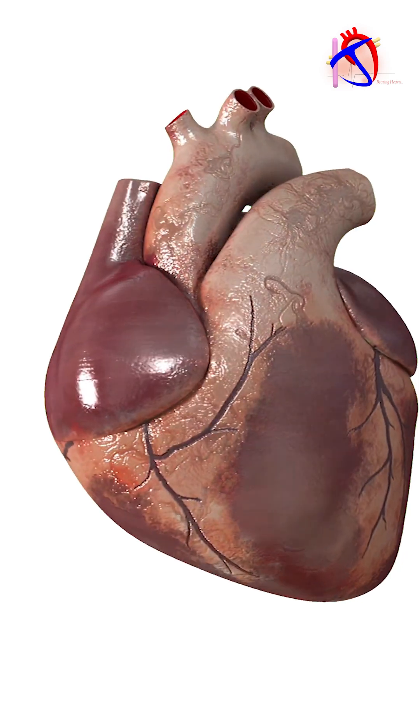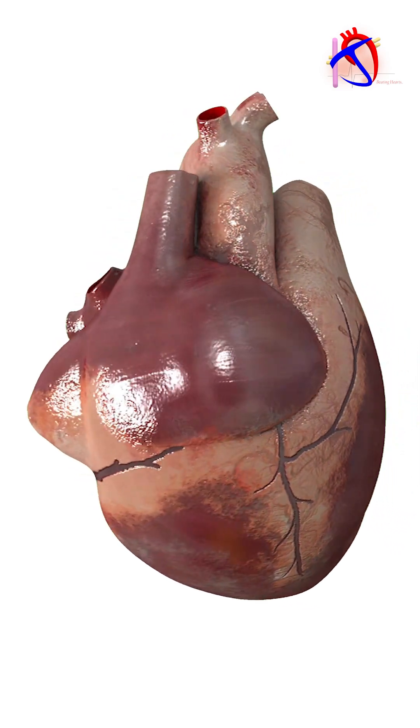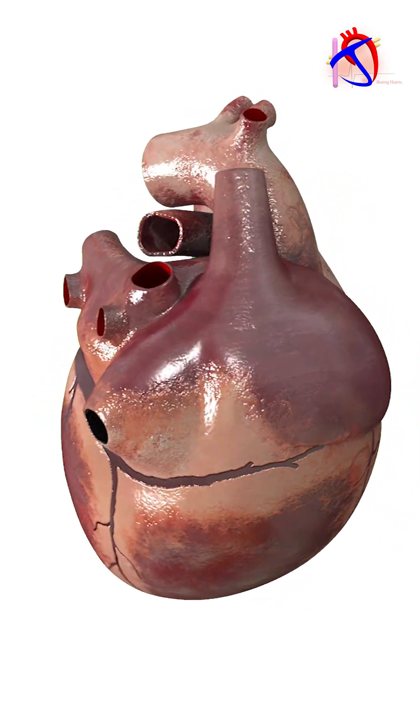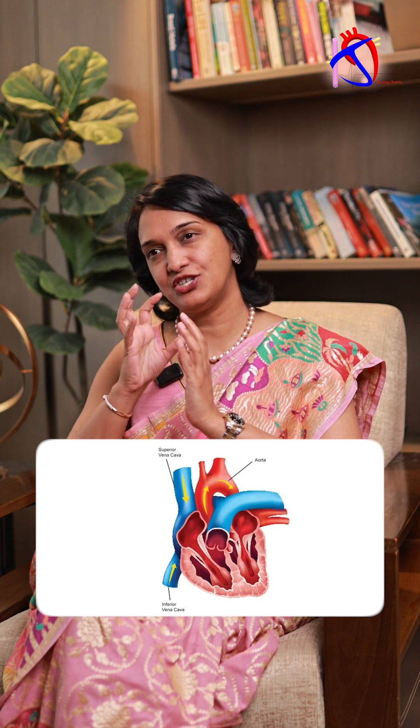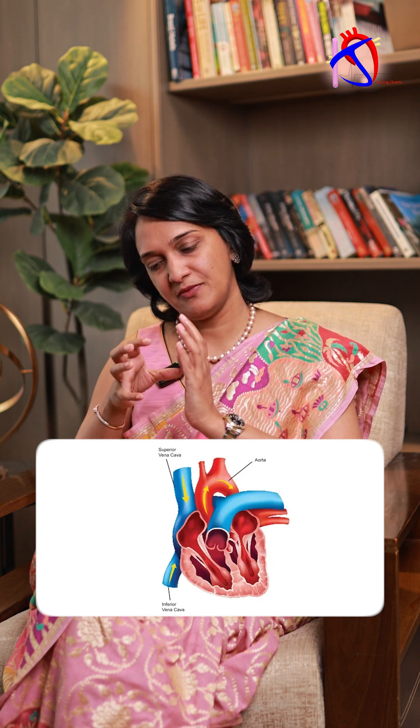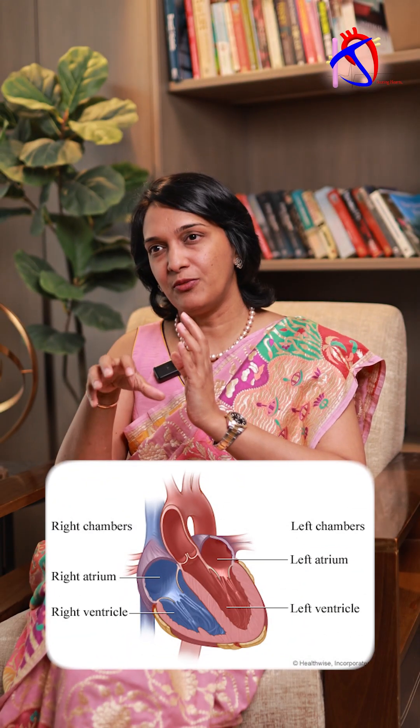Let's talk about basic anatomy of the heart and also the vascular system of the body. You have a right-sided heart and you have a left-sided heart. Your blood comes from the superior vena cava and inferior vena cava. From the veins, it drains into the right atrium — that's the upper chamber of the heart — and then it goes to the right ventricle.